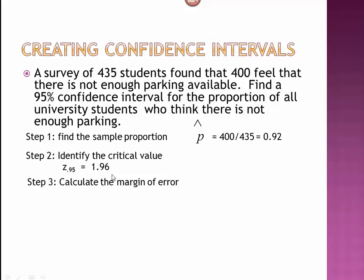Next, we calculate the margin of error. We have our critical value for Z, 1.96. We have our p-hat value, which is 0.92. We know 1 minus that is 0.08, and we divide that by n, which is 435.